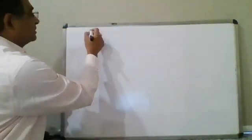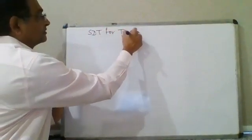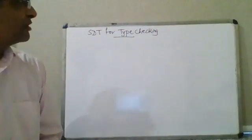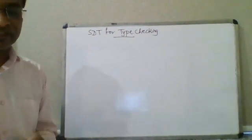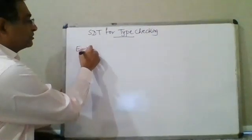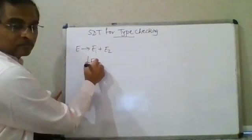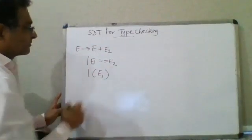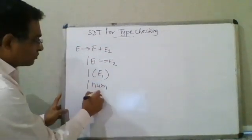SDT for type checking: we are looking at an example of SDT for type checking. There could be different data types — integer, boolean, float, or others. To keep it simple, we check whether the overall expression is boolean or integer. The grammar is: E → E1 plus E2, E → E1 == E2, E → (E1), E → num, E → true, E → false.